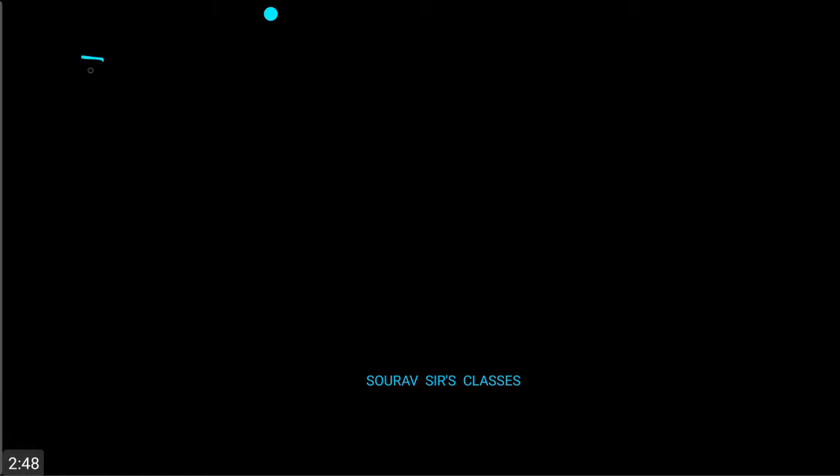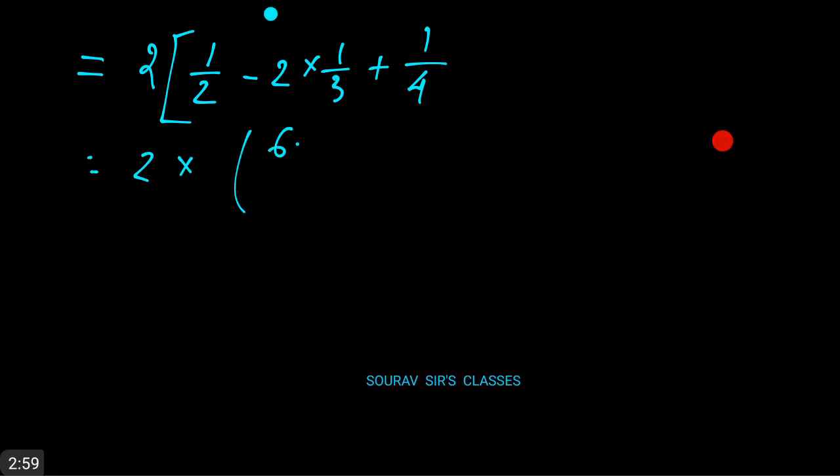Just solving the simple integration we can write 2 times (1/2 - 2×1/3 + 1/4) equal to 2 times (6 - 8 + 3)/12, which is nothing but 1/6, and this is our answer.